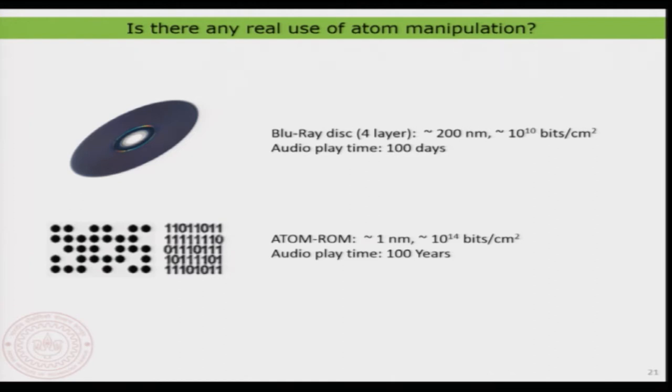At that time I mentioned that we can create this kind of atomic lattice on the surface using manipulation — basically just creating an atom or not adding an atom there. So you can also create something known as an atom row or an information bit based on atoms. But the problem, although the promise is interesting, is that the number of bits you can collect within a centimeter square space is very large compared to a typical modern Blu-ray disc. The problem is actually to stabilize these atoms on the surface.